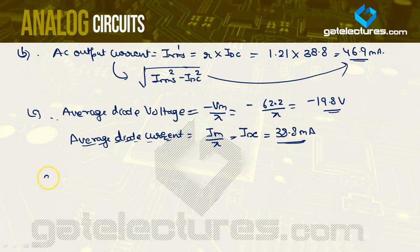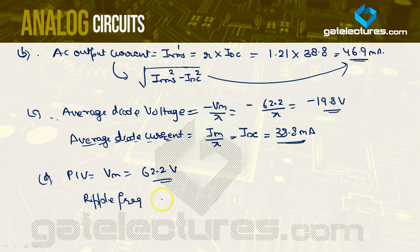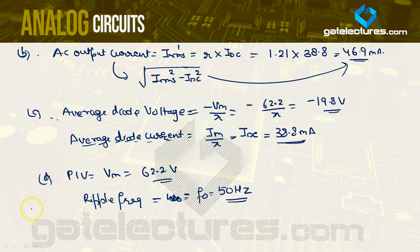For part (d), PIV for a half wave rectifier equals Vm = 62.2 V. The ripple frequency (fundamental frequency) is F₀ = 50 Hz, the same as the input frequency. This is the type of question you will encounter in the GATE examination.